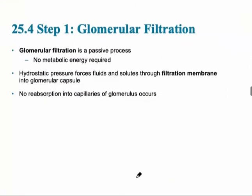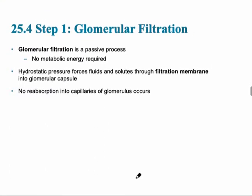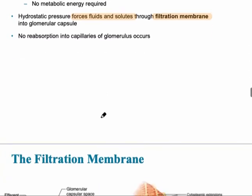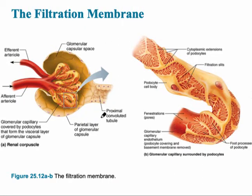Glomerular filtration is a passive process, meaning no energy is actually used. Hydrostatic pressure forces fluids and solutes through the filtration membrane — this is where most everything leaves the blood, except for what doesn't fit through the pores, which are red blood cells and proteins. Everything that goes into the proximal convoluted tubule does so via filtration through this membrane.